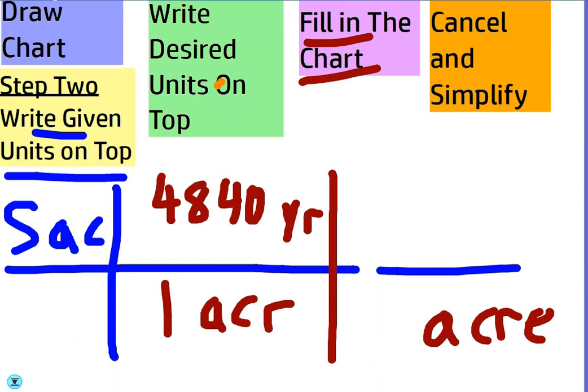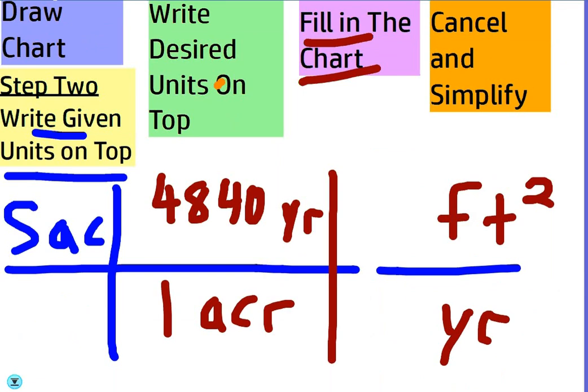And then finally, we want to go from that to square feet. So what would we fill in for the last column? You're right, there's how many square feet are in a square yard? The nine goes on top. And the one on the bottom.